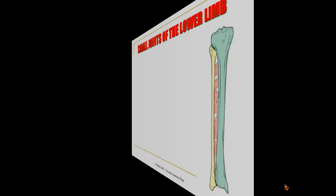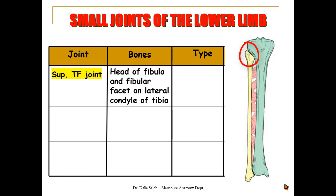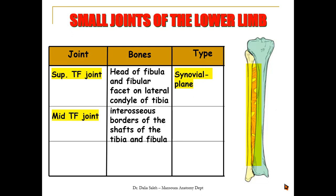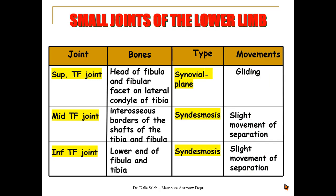For the small joints of the lower limb: the superior tibiofibular joint is made by the articulation of the head of the fibula with the lateral condyle of the tibia — it is a synovial plane joint. The middle tibiofibular joint is made by the interosseous borders of the tibia and fibula held together by fibrous membrane — it is a syndesmosis or fibrous joint. The inferior tibiofibular joint is made by the articulation of the lower ends of the fibula and tibia, also held together by fibrous tissue — a syndesmosis allowing only sliding or gliding movement.